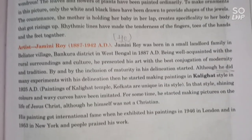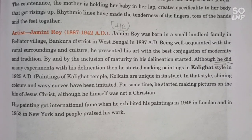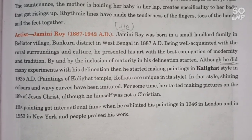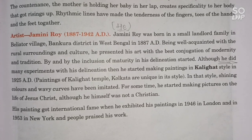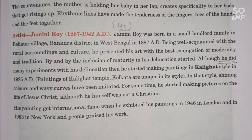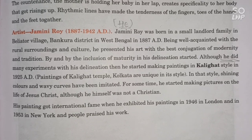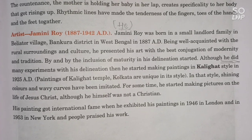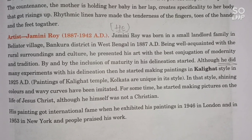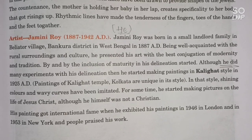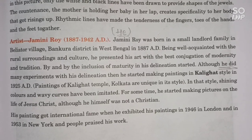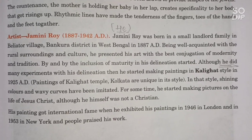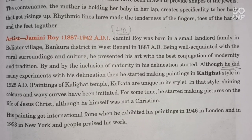Coming to the artist: Jamini Roy was born in a landowner's family in Beliatore village, Bankura district, West Bengal, in 1887 AD. Being well acquainted with the rural surroundings and culture, he presented his art with the best conjugation of modernity and tradition. Day by day his paintings gained maturity, and although he did many experiments, he eventually started making paintings of the Kalighat style.